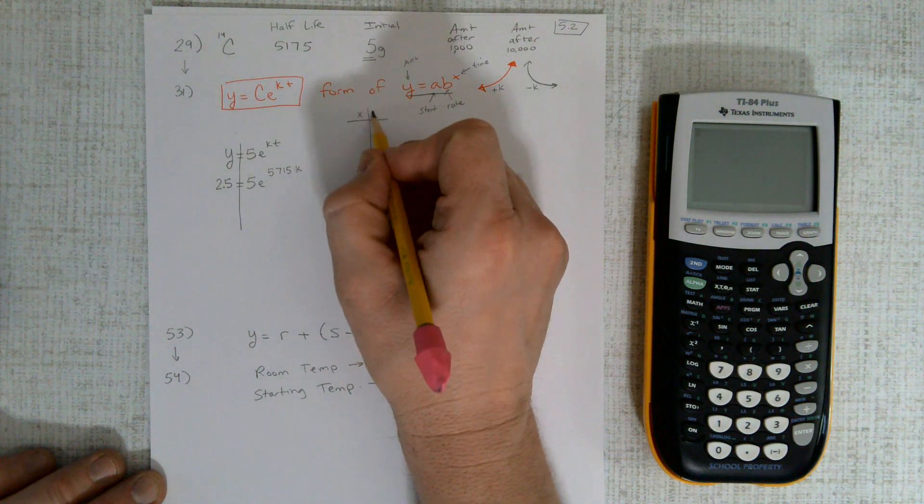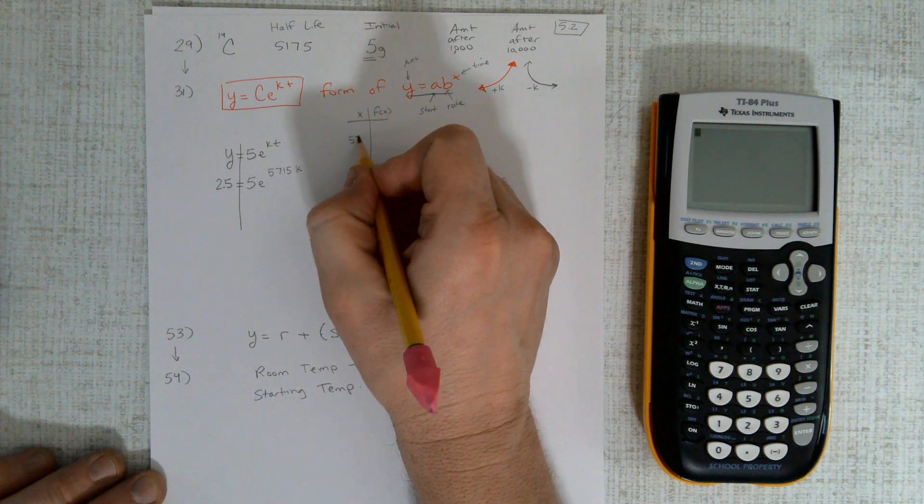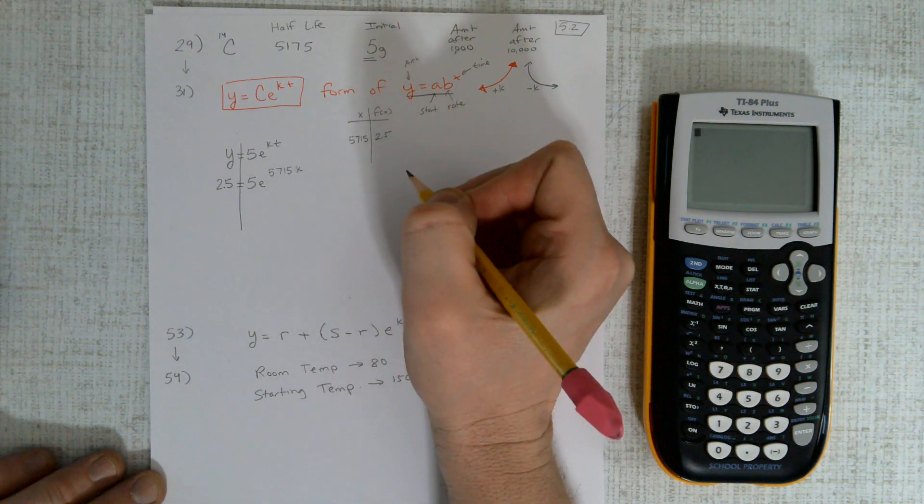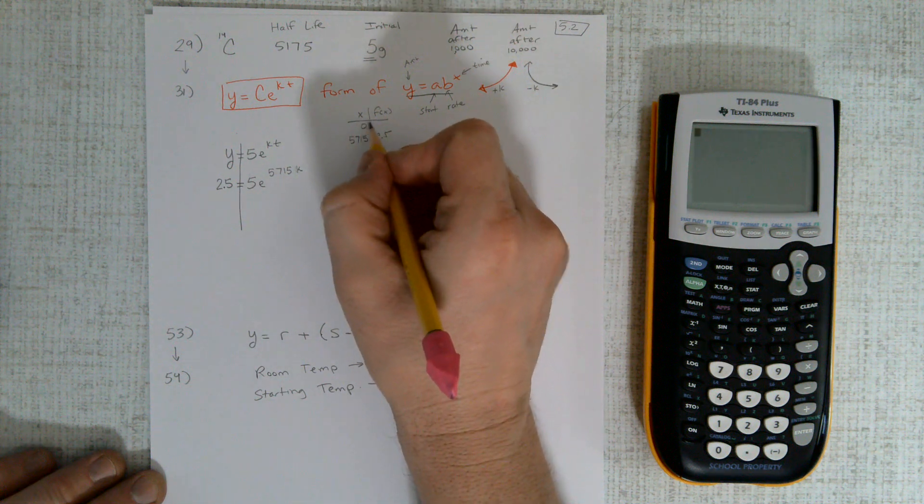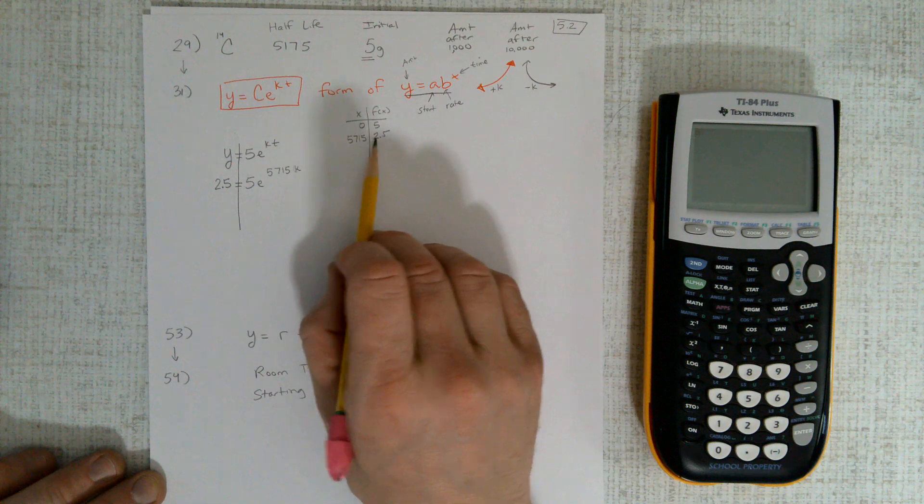If we were making a chart of inputs and outputs, if we input 5,715, the output is down to 2.5. Input 0, we're at 5, but input 5,000 years, we're down to here.